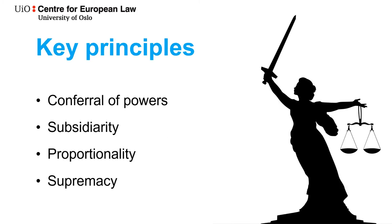When the institutions of the Union create and implement Union law, they have to follow certain key principles. First, since the Union is an international organization and not a state, it only has those powers that are conferred upon it from its member states. Second, according to the principle of subsidiarity, the Union shall use its non-exclusive competences only if the objectives of the proposed action cannot be sufficiently achieved by the member states themselves.